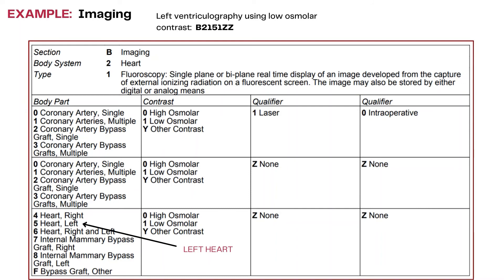Procedures such as left ventriculography, right ventriculography, or coronary angiographies are imaging procedures which are done as part of other major procedures such as an angioplasty, an atherectomy, a stent placement, or PTCAs. All such imaging procedures are coded from this particular table.